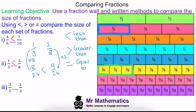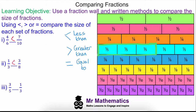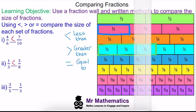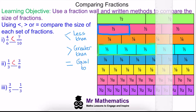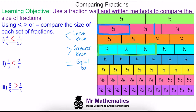Moving on to question three, we have three fifths highlighted in green compared to one third highlighted in blue. Using our ruler we can see that three fifths is greater than one third. We can check this using a written method where three fifths is equivalent to nine fifteenths and one third is equivalent to five fifteenths — again, nine fifteenths is greater.